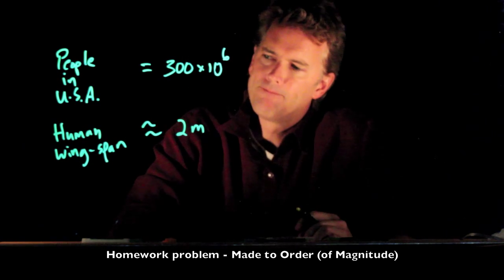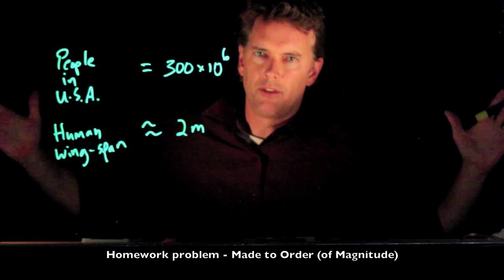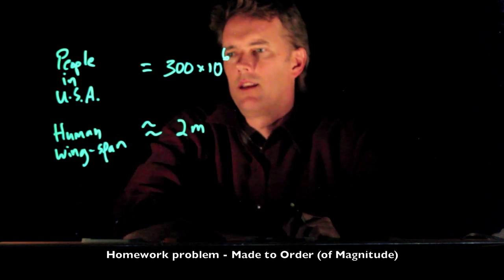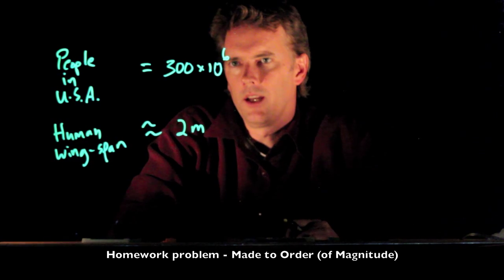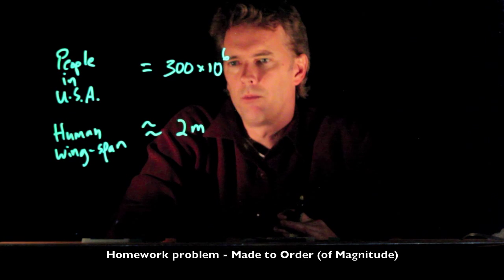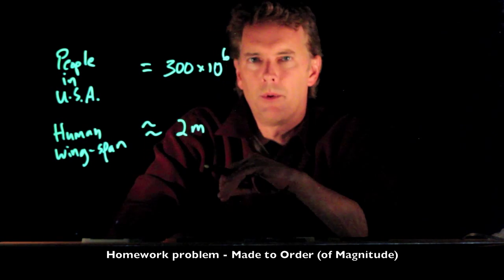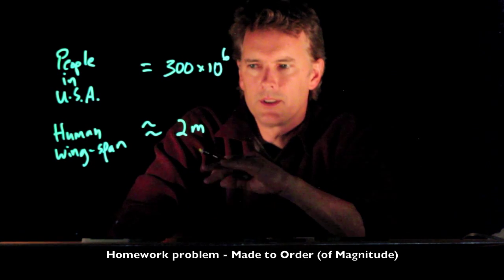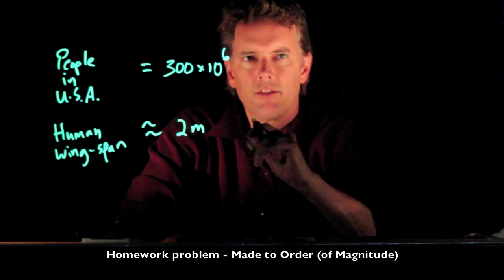So let's say the wingspan is two meters. Two meters end-to-end for all these people holding hands — how far around would we go? We just multiply the number of people times that distance.